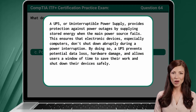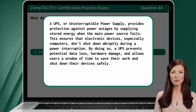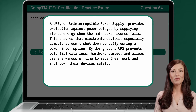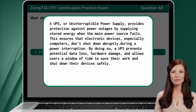A UPS, or Uninterruptible Power Supply, provides protection against power outages by supplying stored energy when the main power source fails. This ensures that electronic devices, especially computers, don't shut down abruptly during a power interruption. By doing so, a UPS prevents potential data loss and hardware damage, and allows users a window of time to save their work and shut down their devices safely.